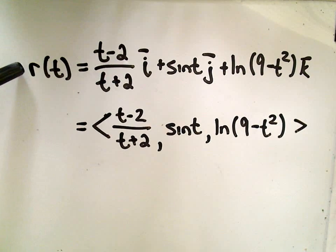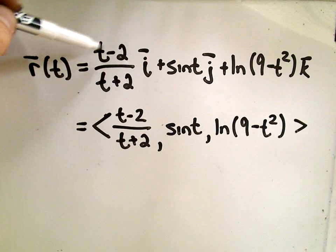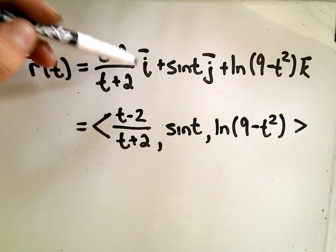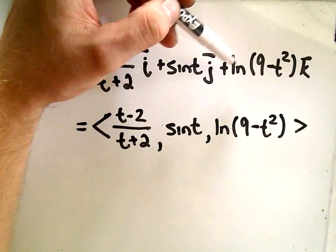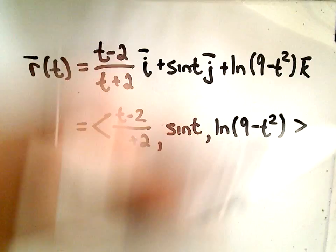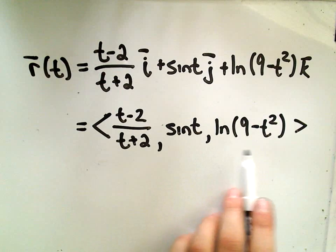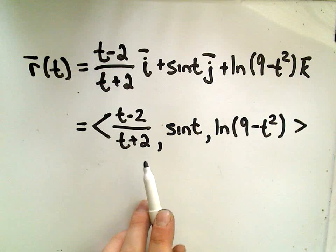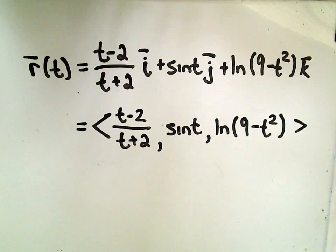So here my vector equation R is going to be (t-2)/(t+2) i plus sin(t) j plus the natural logarithm of (9-t²) k. Equivalently, we could write it in this alternate notation, alternative notation.